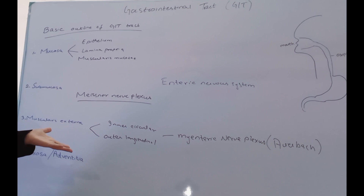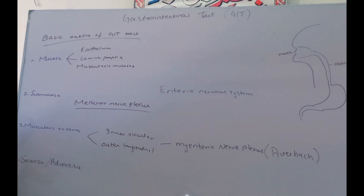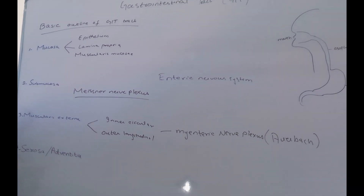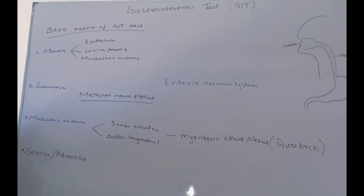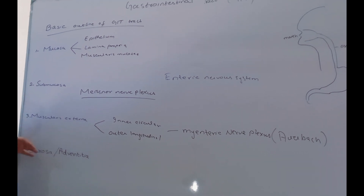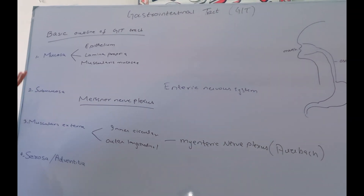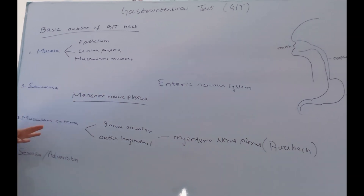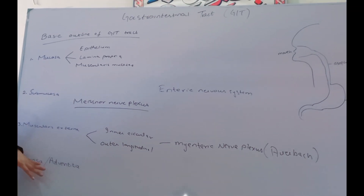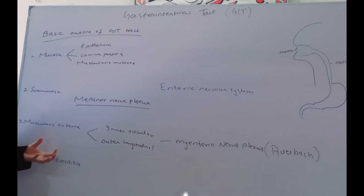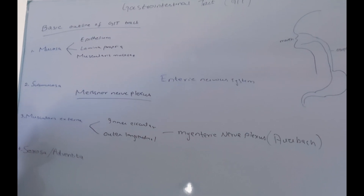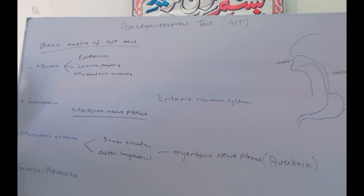The last layer is the serosa or adventitia. You should know the difference between them. Serosa is a connective tissue layer lined by simple squamous epithelium known as the mesothelium. If the connective tissue layer is covered by mesothelium, we call it serosa. If we remove this mesothelium, then it is known as adventitia. In places where organs of the GIT are suspended in the abdominal cavity or have mesenteries, you will find the serosa. But in other locations, for example the esophagus, where structures are not attached to the peritoneal cavity, you will find the adventitia — just a connective tissue layer with blood vessels and fibroblasts.